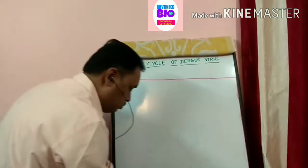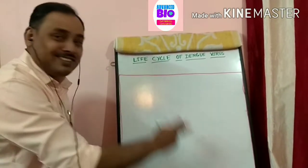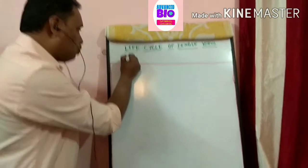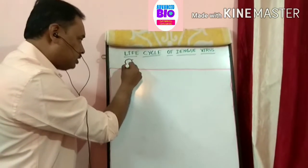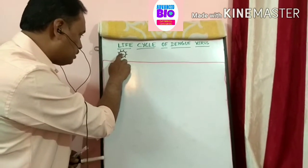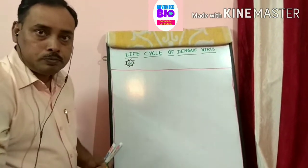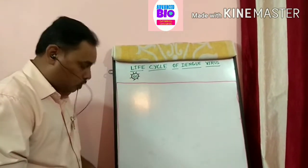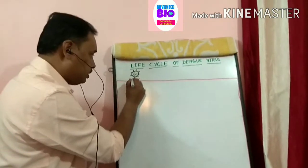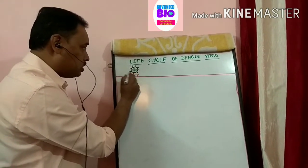Now I am drawing a diagrammatic representation. This is the immune cell — I am drawing it as a rectangular cell. This is the dengue virus having the spike protein, and this is the genome, which is a single-strand positive-sense RNA. The receptor is present on the surface of the plasma membrane of this immune cell, and these receptors are complementary structures to the spike protein.